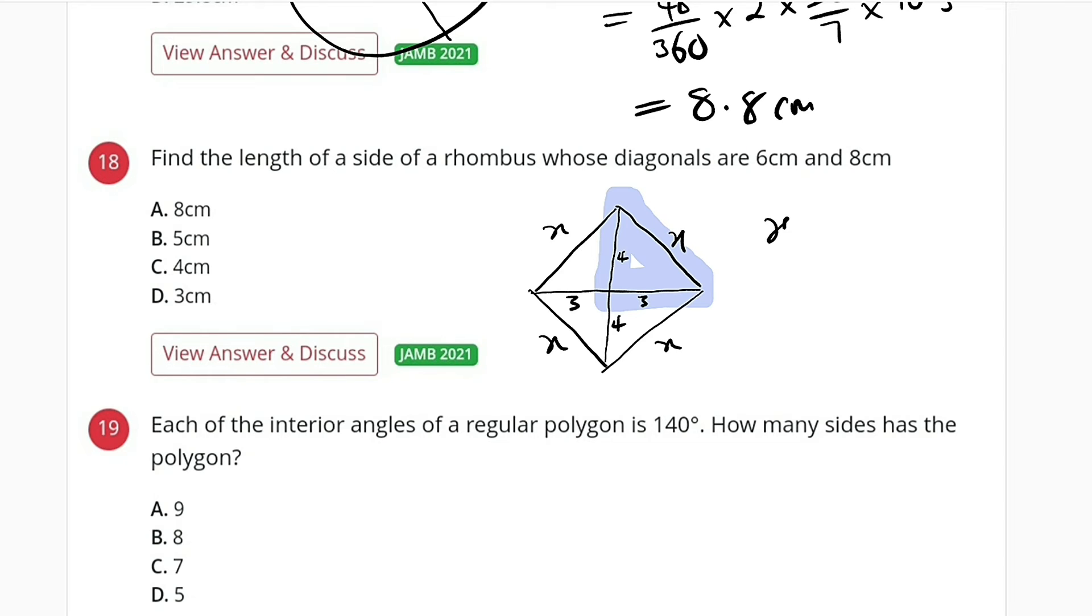I can use x squared is equal to 4 squared plus 3 squared. x squared is equal to 4 squared, 16, plus 3 squared is 9. x squared is equal to 25, and x is equal to the square root of 25.